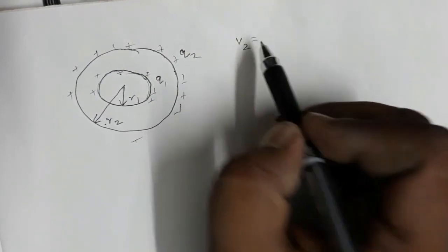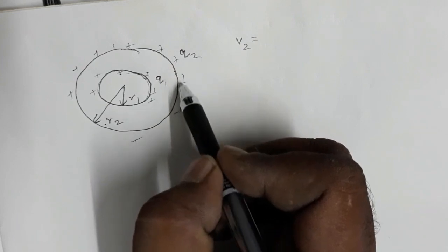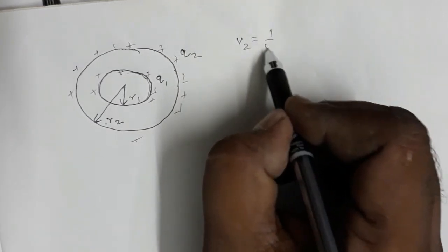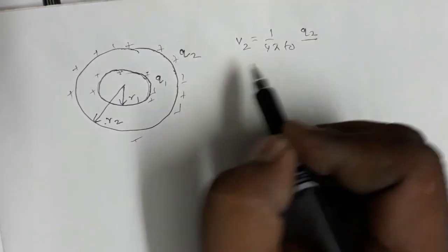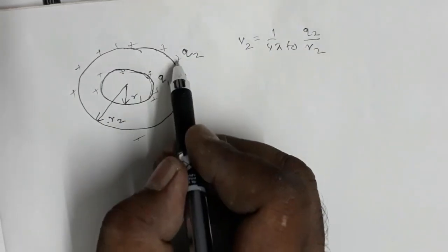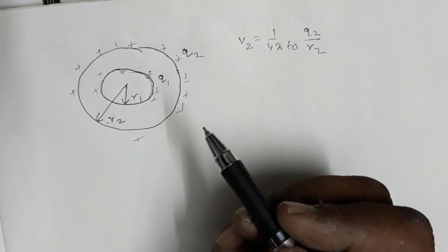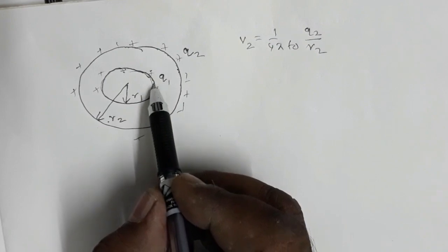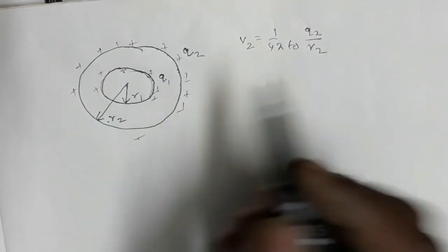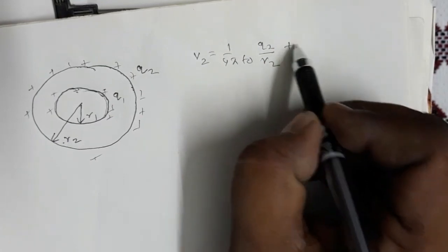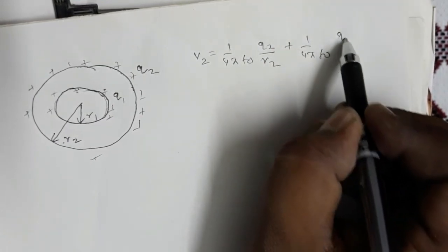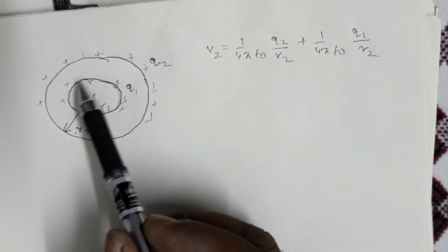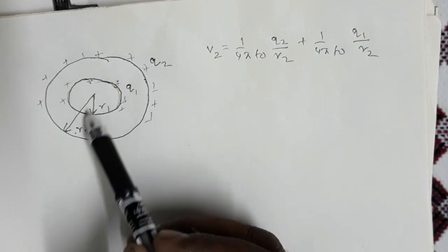The potential on the outer surface V2 equals the potential due to charge q2 on its own surface, which is (1/4πε₀)(q2/r2), plus the potential due to charge q1. Since q1 is inside the shell of radius r2, the distance term is r2, so it contributes (1/4πε₀)(q1/r2). Therefore V2 = (1/4πε₀)(q2/r2 + q1/r2).